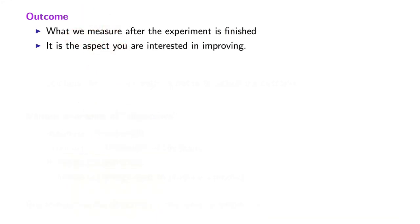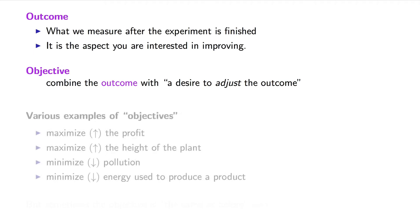When we combine an outcome and the need to adjust the outcome, we get what we call an objective. In other words, outcome plus a desire to adjust the outcome equals the objective. Here are some examples of objectives: maximize the height of a plant, minimize the amount of pollution. We most often want to maximize or minimize our outcomes,